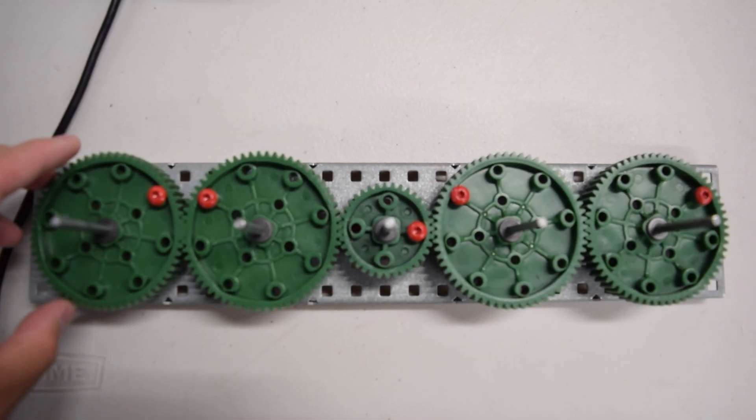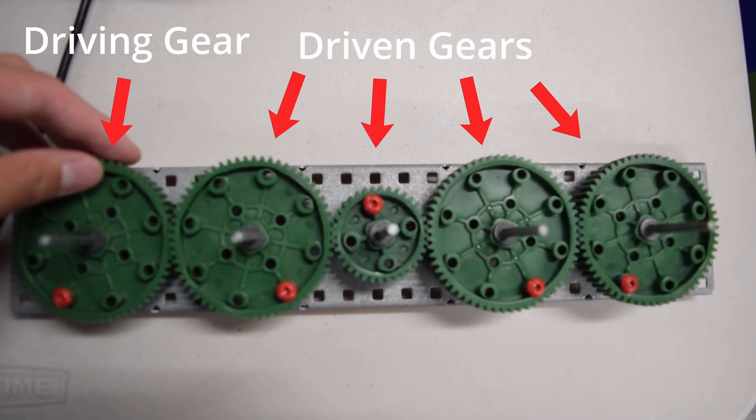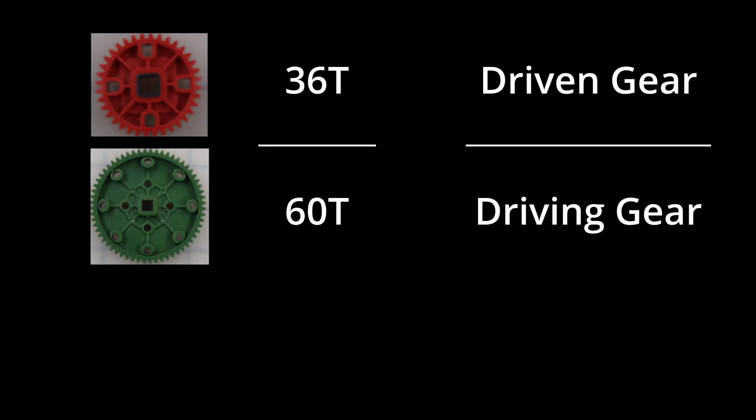To find the gear ratio, divide the number of teeth of the driven gear by the number of teeth of the driving gear. Since we're spinning a 60 tooth gear, it's the driving gear. So the 36 tooth gear on the right is the driven gear.